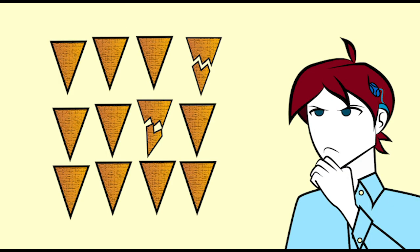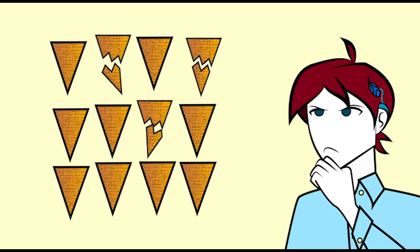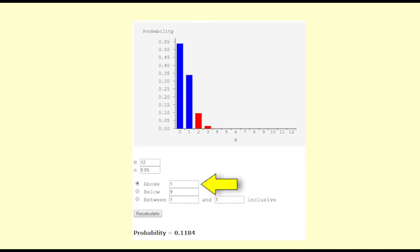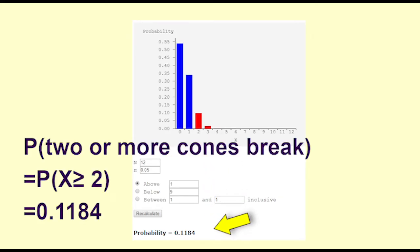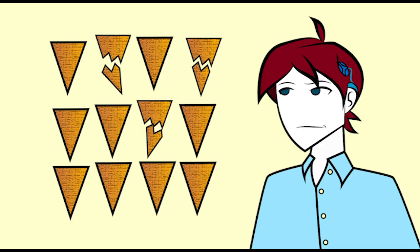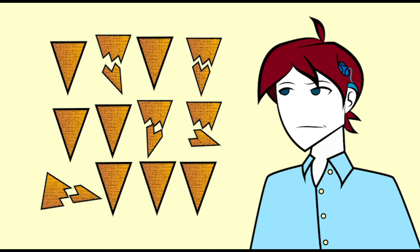Now, say I wanted to know the probability that two or more cones break in a box of 12. I change the input to above 1. By looking at the graph, I can see that I've included all values 2 and above. The probability of two or more cones breaking is 0.1184. We can use the app to explore further the likelihood of different numbers of breakages in different ranges of numbers of breakages.